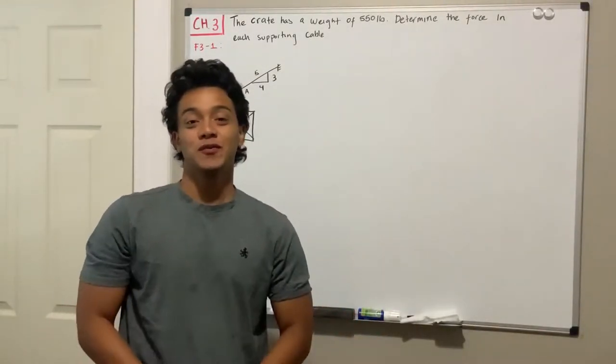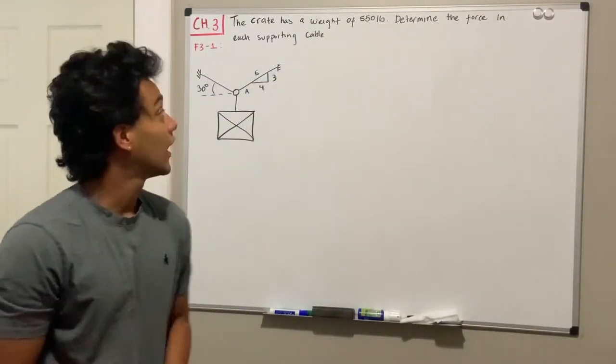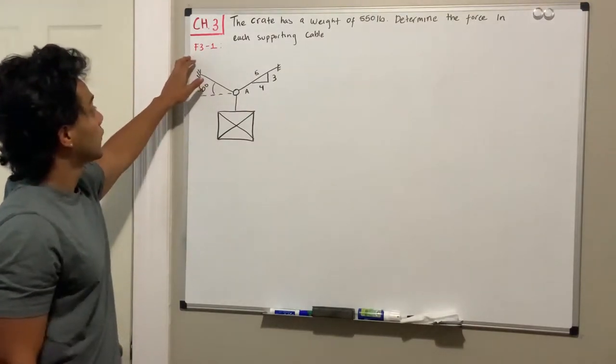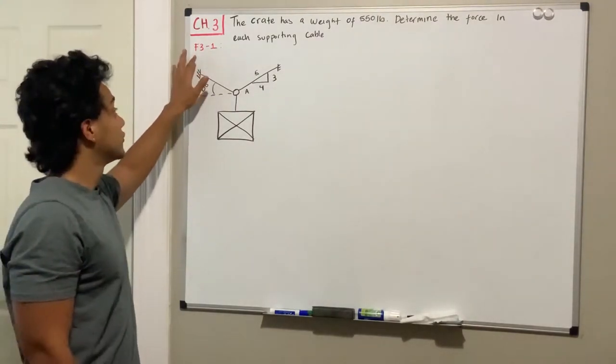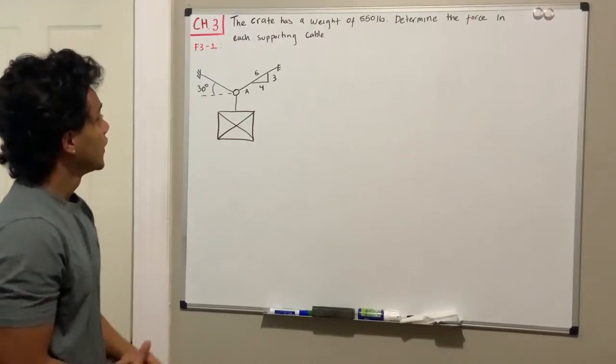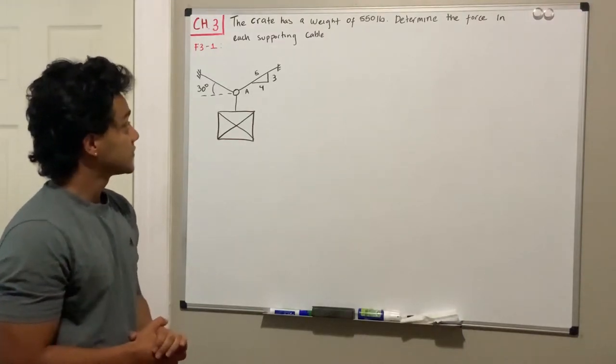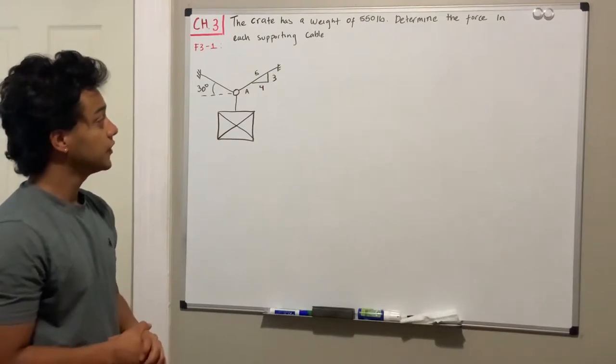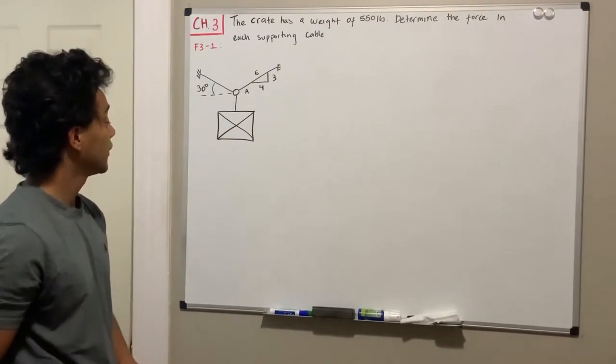Welcome back everyone to learning by teaching. We are in statics and we are now in chapter 3. We are going to do the fundamental problem 3.1. It says the quad has a weight of 550 pounds, determine the force in each supporting cable.